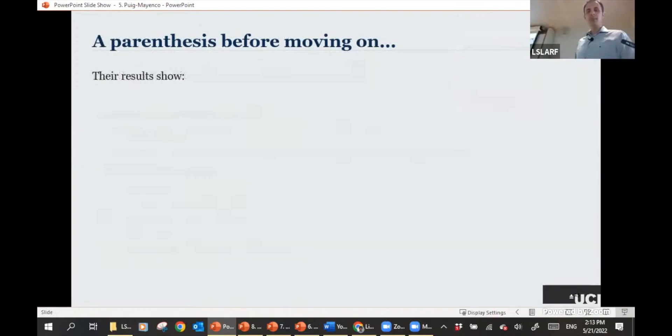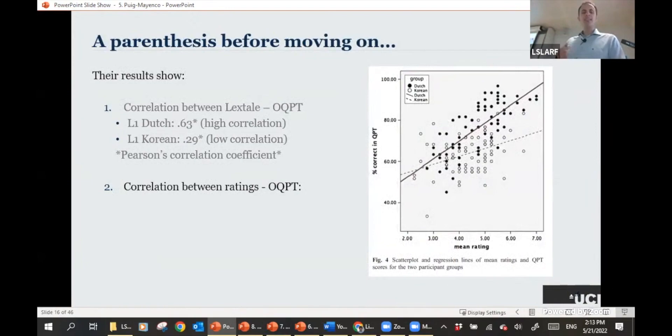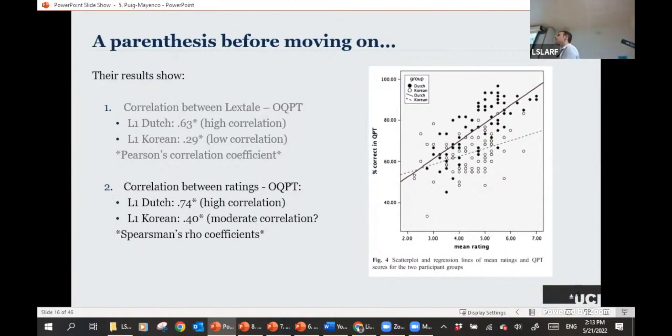They looked at the correlations between these measures. Very briefly, the correlation between the LexTALE and the Oxford Quick Placement Test was fairly high. The correlation coefficient, 0.63, that's a fairly high correlation, indicating that for the Dutch participants, the LexTALE did correlate nicely with the scores in the Oxford Quick Placement Test. For the L1 Korean speakers, the correlation was much lower, indicating that L1 had an effect, and linguistic distance between the L1 and L2 did influence the correlation of the LexTALE. They also presented some correlations between ratings and Oxford Quick Placement Test, and the picture is better for mean self-ratings of proficiency.